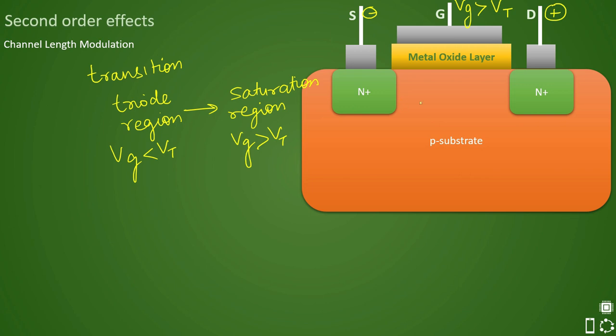There will be drain current which flows in this direction and electrons will flow from here to here.